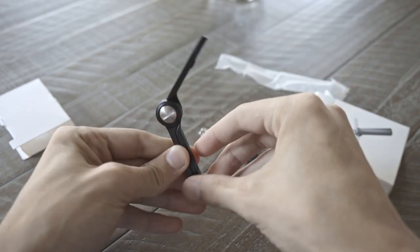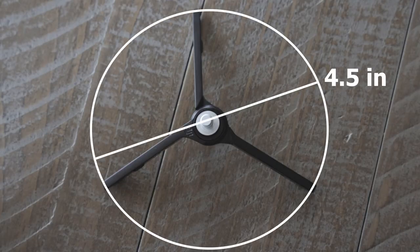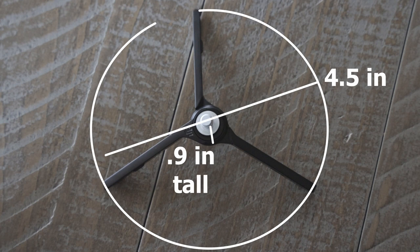The little legs nicely fold out, turning it into a tripod. The diameter of the tripod is 4.5 inches, and it stands 0.9 inches tall.